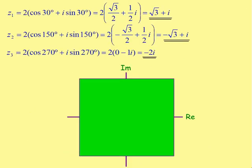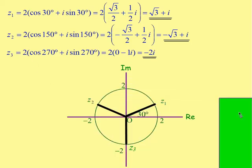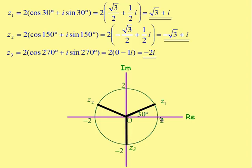For z3 = 2(cos270 + i·sin270): cos270 = 0 and sin270 = -1, so z3 = 2(0 - i) = -2i. On the Argand diagram, all three roots lie equally spaced on a circle of radius 2: z1 at 30°, z2 at 150°, and z3 at 270°. Since 270 - 360 = -90°, z3 appears at -90° on the standard diagram.